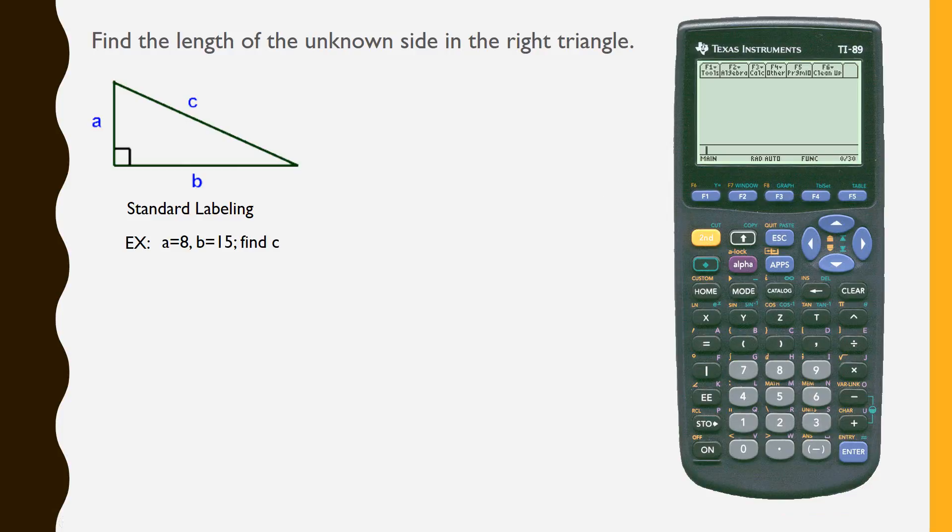We are given that A equals 8, B equals 15, and we are asked to find side length C. To do so we're going to use the solve function in the TI-89 calculator. The first thing we're going to do is enter the function into the calculator.